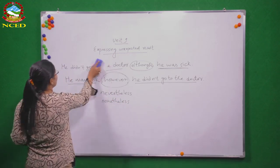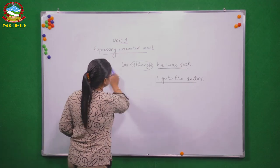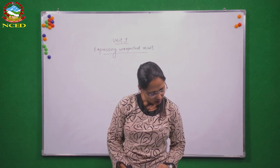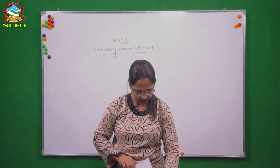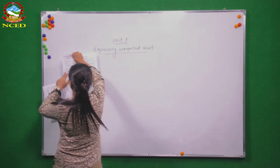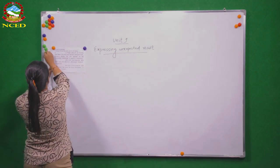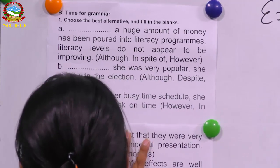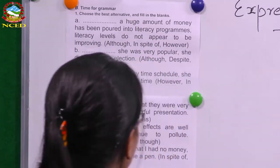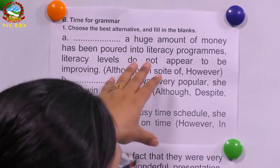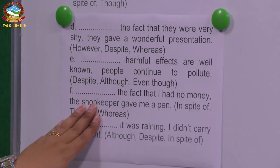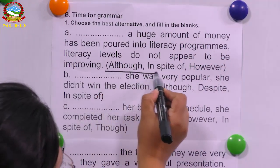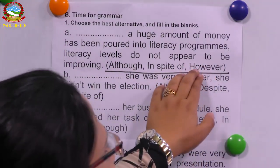If you are not clear, our exercise next will help you. Now we will look at the book. There is an exercise on page number 100. Open your book and look at page number 100, grammar number B. Choose the best alternative and fill in the blanks. There are some alternatives given — the words we just practiced for expressing unexpected result. Choose the appropriate one and fill in the blank.